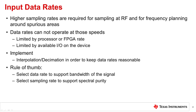With the new higher sampling data converters, higher data rates are required. In many cases, these rates are too high for the data converter device or the FPGA/ASIC that is receiving or driving the data to the data converter. Another reason may be the number of IOs available. In either case, the data rate usually needs to be reduced, and to do this, interpolation and decimation are used.